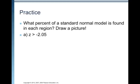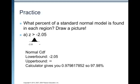What percent of a standard normal model is found in each region? Draw a picture. Remember, you find the area underneath the curve in that region, and then you just convert that area to a percent. We want Z greater than negative 2.05. So we sketch a normal curve. Negative 2.05 is pretty far to the left of the mean of 0, and we want the area greater than that, so the area to the right.